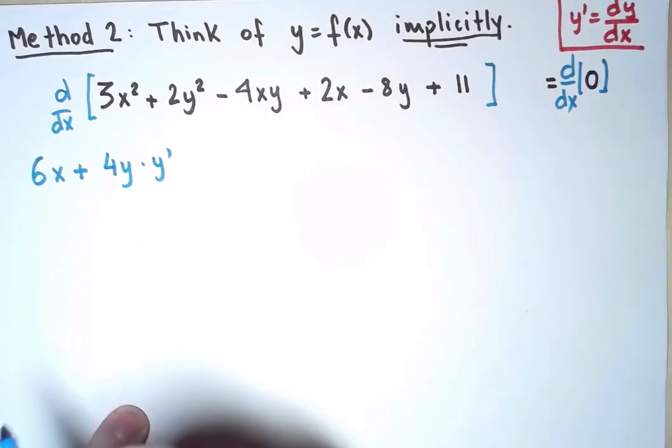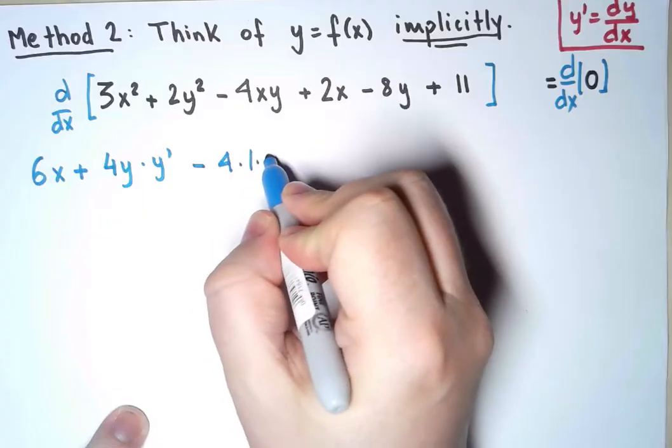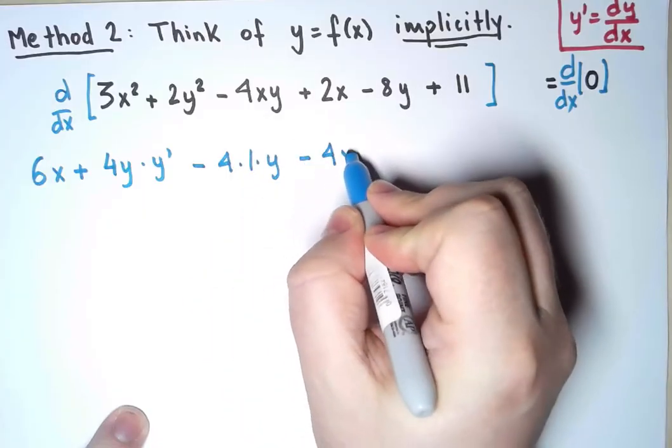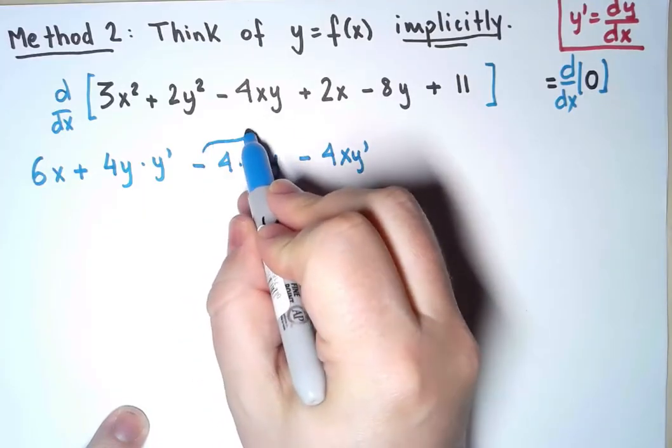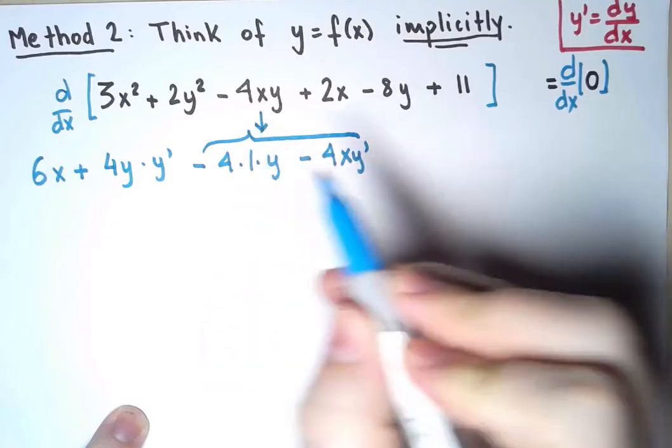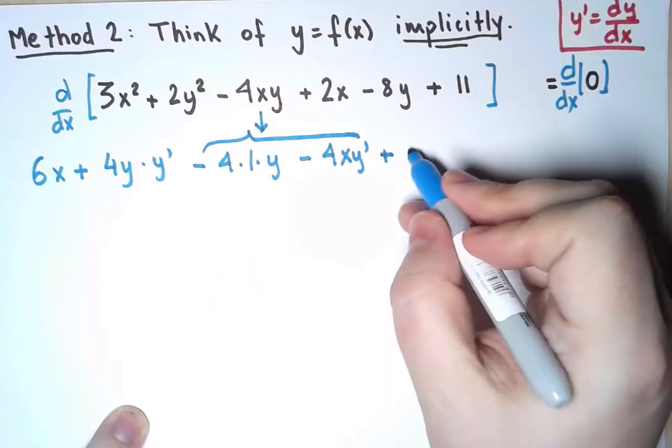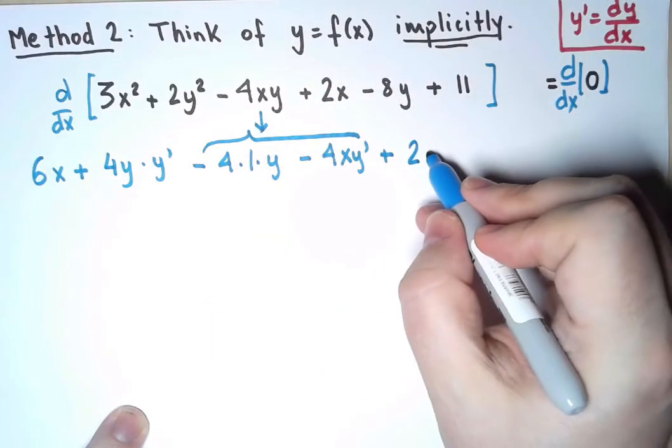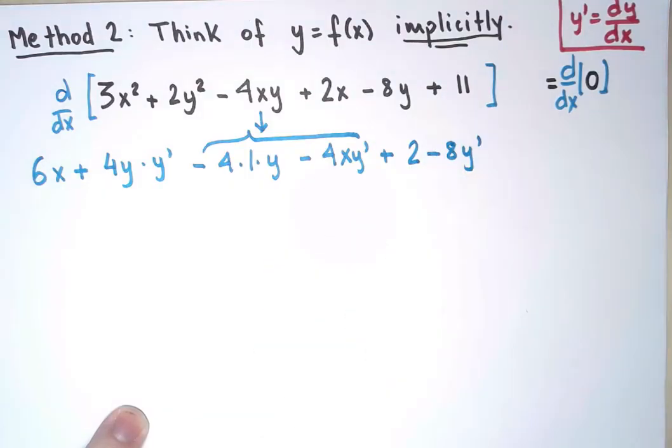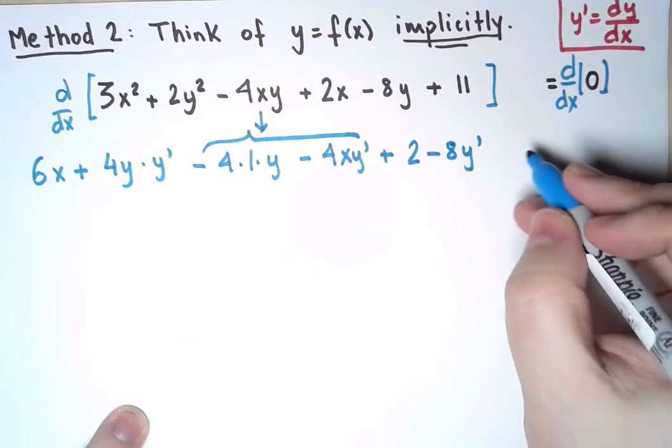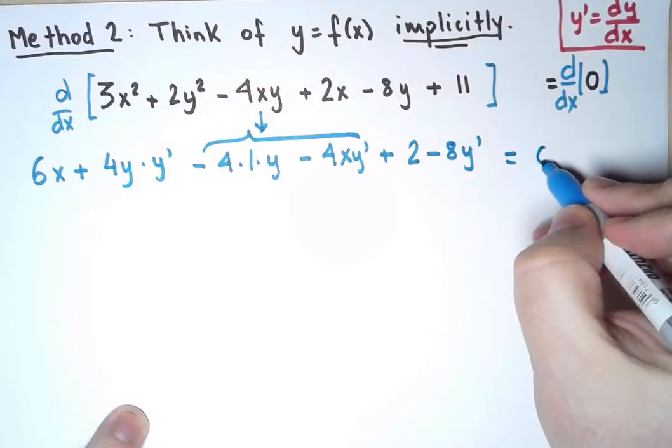–4xy, I need to use the product rule, and I get two terms, –4·1·y – 4xy'. And these two terms, they both come from here. The derivative of 2x is 2, and the derivative of 8y is 8y', the derivative of 11 is 0. And on the right-hand side, the derivative of 0 is simply 0.